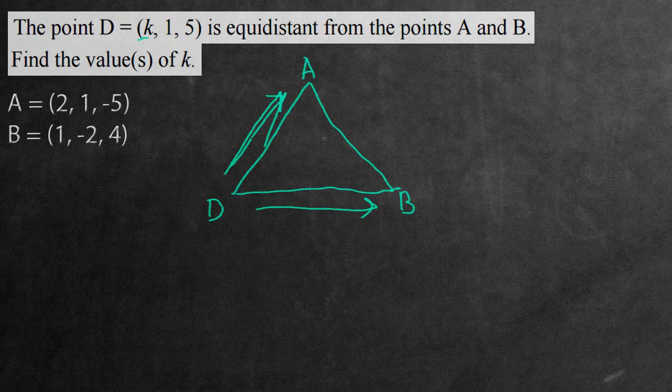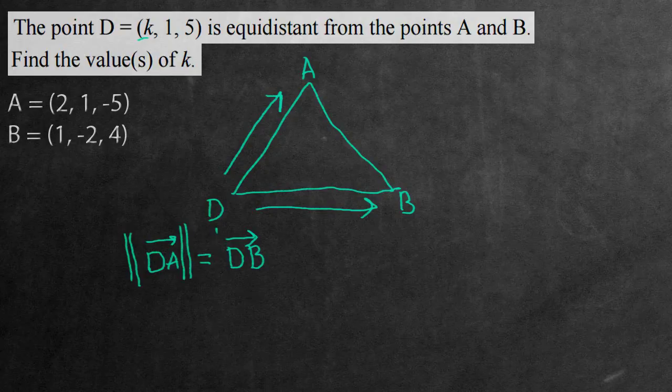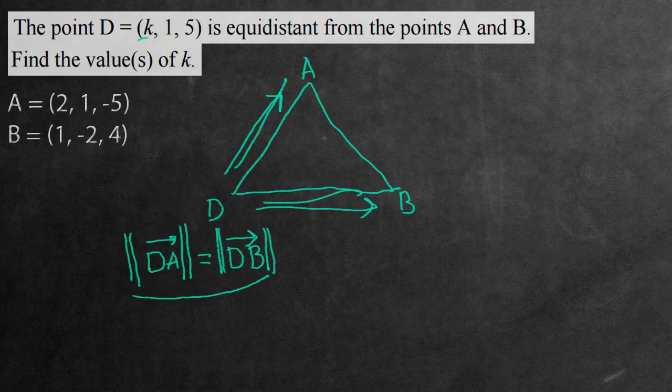So what is this right here? This is actually a directed line segment. The directed line segment of D to A is equivalent to the directed line segment from D to B. But to be more specific, it's the length of these segments, not the vectors themselves. And this is how you denote length: put two vertical lines on the left and right hand side. So this is the equation that we created that's going to allow us to solve for the component K in the point D.